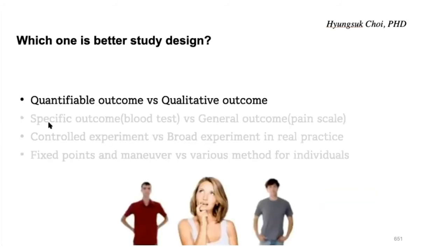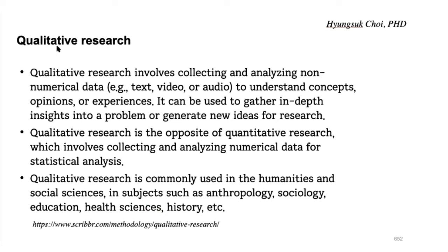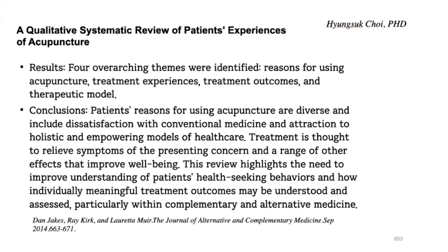I understand the difference between controlled experiment and real life. But quantifiable versus qualitative — I still support quantifiable outcome as more important. Most acupuncturists strongly believe quantifiable outcome is way more important than qualitative outcome. But there are some studies called qualitative research. Qualitative research involves collecting and analyzing non-numerical data — what really happened in your examination room. We need this kind of research too.